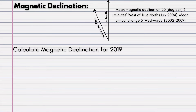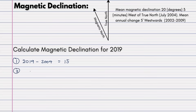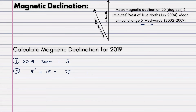The question asks: calculate the magnetic declination for 2019. Step 1 — difference in years: 2019 minus 2004 equals 15 years. Step 2 — multiply by annual change: 5 minutes times 15 years equals 75 minutes total change. Remember, there is no such thing as 75 minutes — you must convert. 60 minutes makes one degree, and 75 minus 60 is 15, so the total change is 1 degree and 15 minutes.